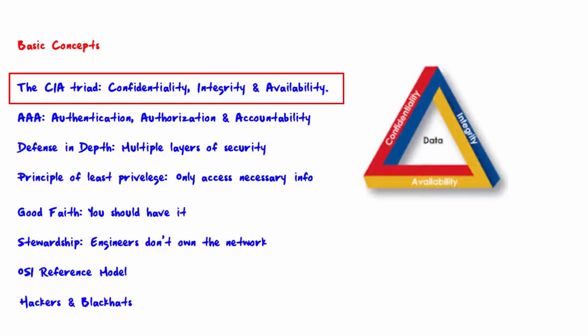CIA stands for confidentiality, integrity, and availability. In general, all data that you wish to keep secure needs to remain confidential, maintain integrity, and also be available. Confidentiality means simply keeping data secret — secret from those who are not authorized to view it. Integrity means keeping data from being modified by unauthorized people or by accident. And availability means that information is available when you need it.